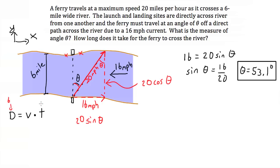So d is 6, and t is what we're looking for, but we've got to plug in a velocity. We cannot plug in 20 miles an hour, because 20 miles an hour is not in the y direction. We can't plug in 16 miles an hour, because that's in the x direction, not the y.